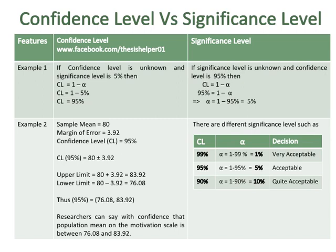There are different significance levels. At a 99% confidence level, the level of significance is 1% and the decision is very acceptable. At a 95% confidence level, the level of significance is 5% and the decision is acceptable. At a 90% confidence level, the level of significance is 10% and the decision is quite acceptable.